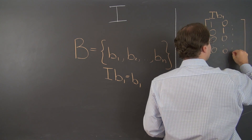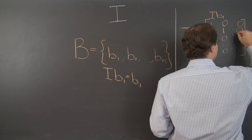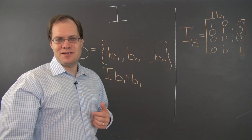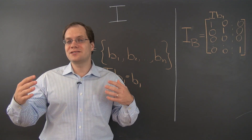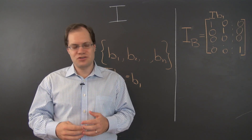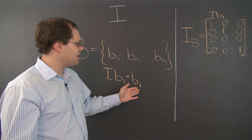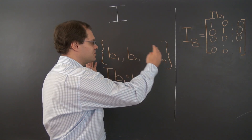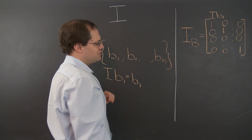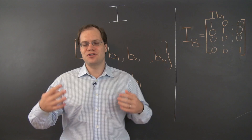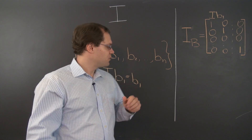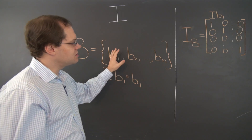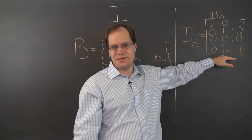It'll be the same for all of them. For the last one, we'll get a few zeros and then a 1 at the end, because I of B sub N equals B sub N. So even though we said we're ignoring the eigenvalue structure, the argument is basically the same as in the case of the eigenbasis. Regardless of our choice of basis, the result is the identity matrix.